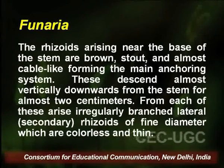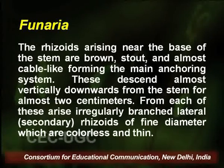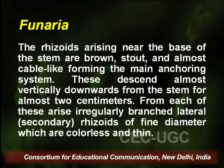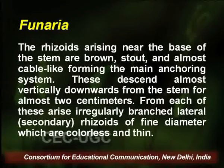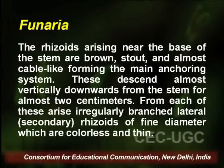The rhizoids arising near the base of the stem are brown, stout, and almost cable-like, forming the main anchoring system. They descend almost vertically downwards from the stem for approximately two centimeters. From each of these primary rhizoids arise irregularly branched lateral or secondary rhizoids, which are of fine diameter, colorless, and thin. Secondary rhizoids enhance the surface area for water absorption and increase the anchorage function.